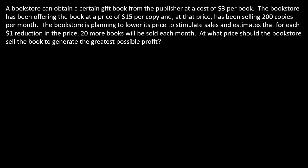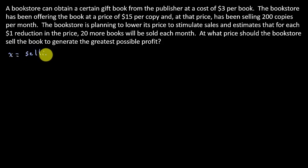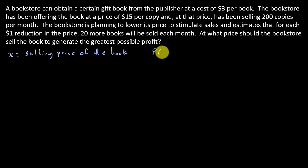First, the important thing here is setting up our function. What are they wanting us to maximize? They want to know the price that will generate the greatest profit — so we're going to let X equal the selling price of the book. They want us to maximize the greatest possible profit. We know that profit is equal to revenue minus cost.